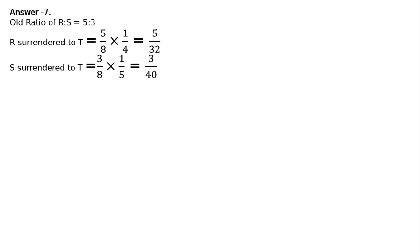Likewise, S surrendered to T. His share was 3 by 8. And it is written in the question that he surrendered one-fifth of his share. That is equal to 3 upon 40. 3 ones are 3 upon 5. 8 5s are 40. Hence, R surrendered to this much. S surrendered to this much.